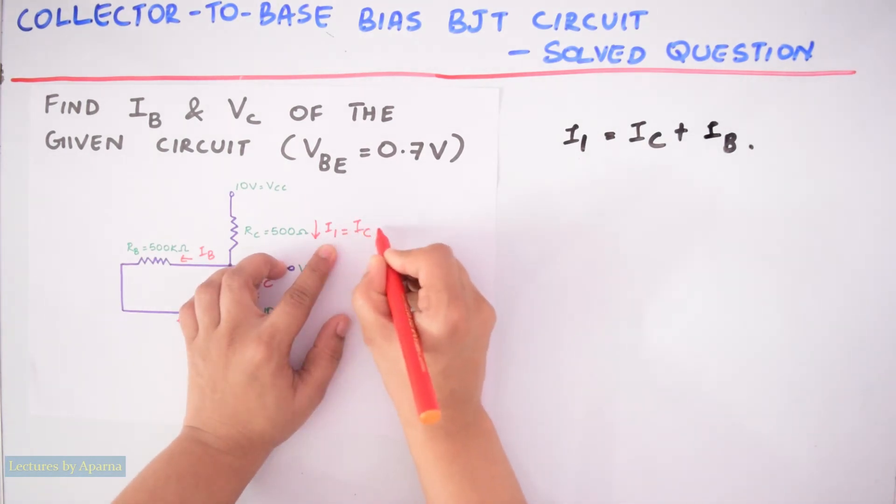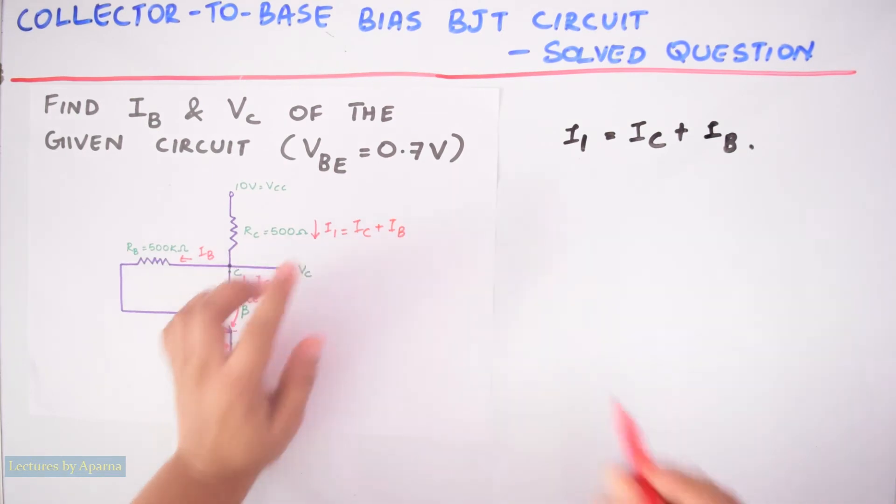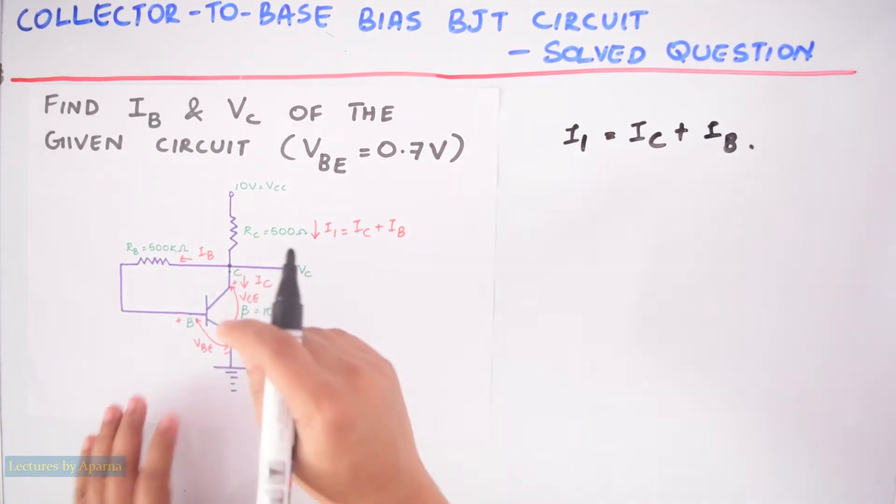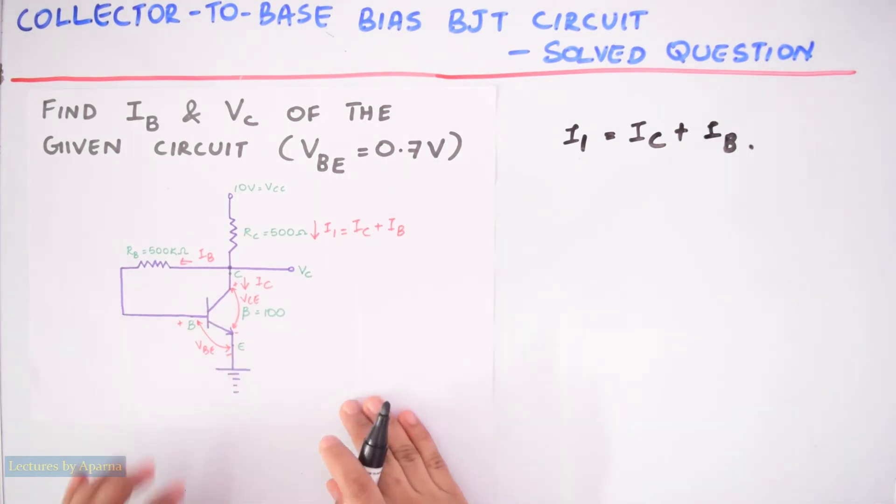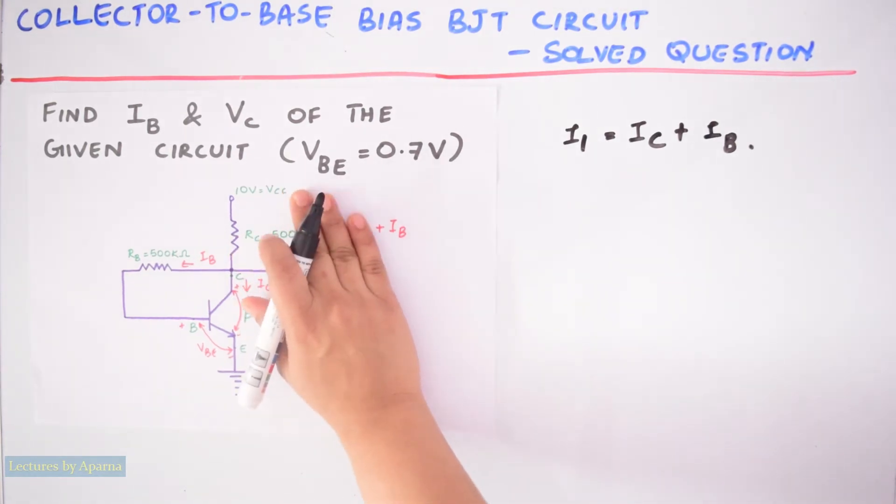Now we have to consider the input section and apply KVL here. KVL or Kirchhoff's voltage law says that algebraic sum of voltages in a loop will be equal to 0. So we will start from VCC.